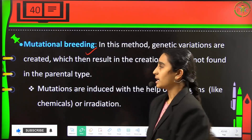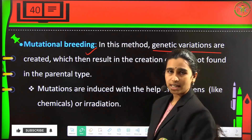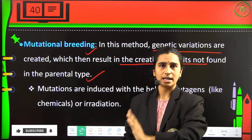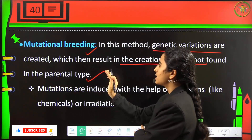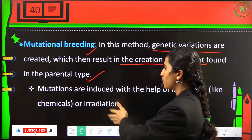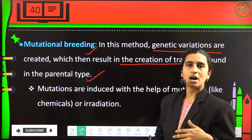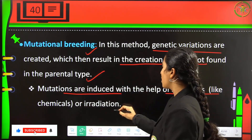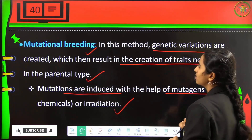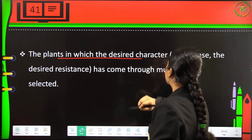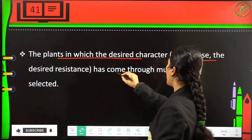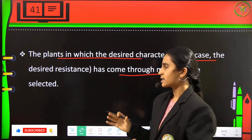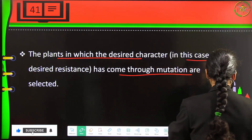Mutational breeding involves a sudden change — genetic variations are created resulting in traits not found in the parental type. Under certain conditions, gene variabilities are changed and the progeny shows traits not present in parent types. Mutations are induced using mutagens like chemicals or by irradiation techniques. Plants in which the desired resistance has come through mutations are then selected for the next crop yielding procedures.